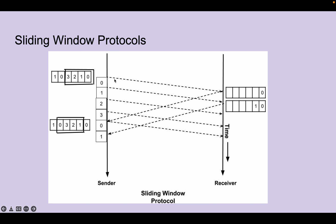Here is a visual of how sliding window protocols work. On the left side you have the sender and on the right side you have the receiver. Starting from zero, you can see the acknowledgment being sent, and then it's piggybacking off the data frame, which brings it down. Time also helps keep track of the window.